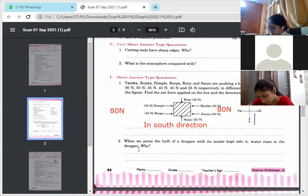Next is, when we press the bulb of a dropper with its nozzle kept into water, water rises in the dropper. Why is it so? Why does that happen? You have seen that dropper. Pressure. Because of the air pressure inside it. Because already the dropper has air, and as you press the dropper from the upward side, the water level rises into that due to the pressure. So this was your worksheet number 19.